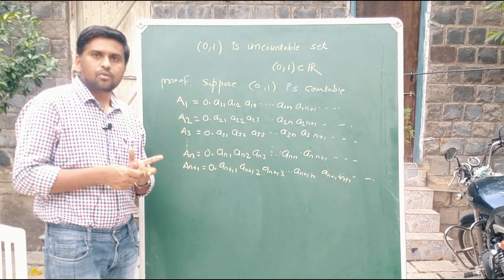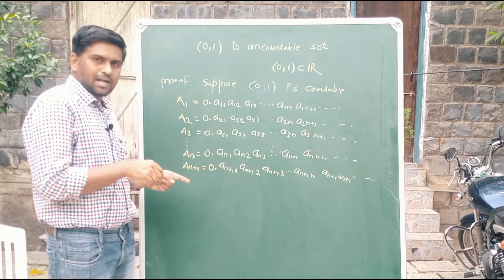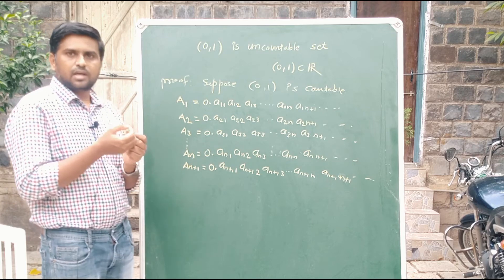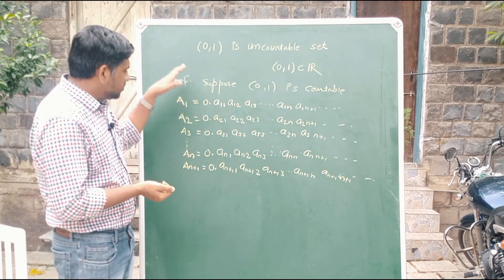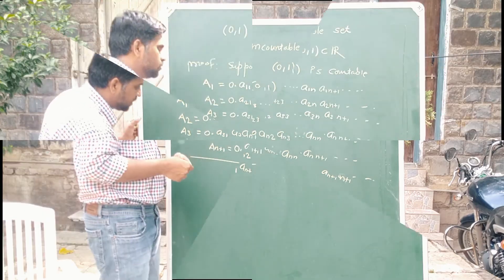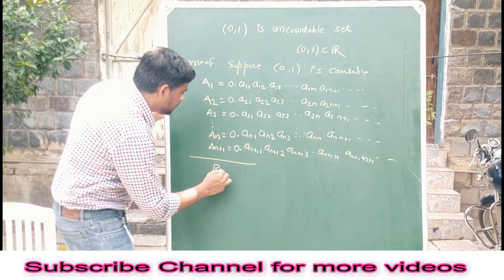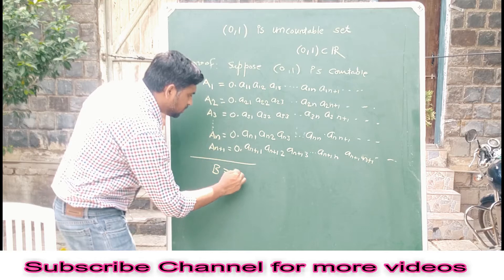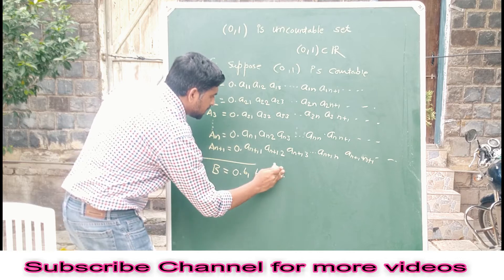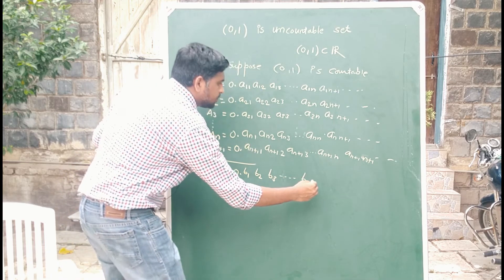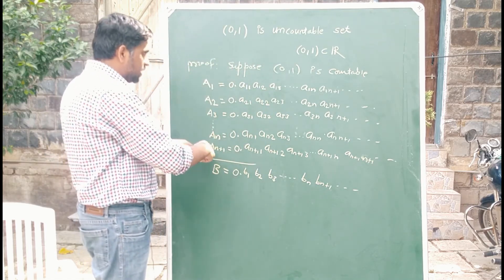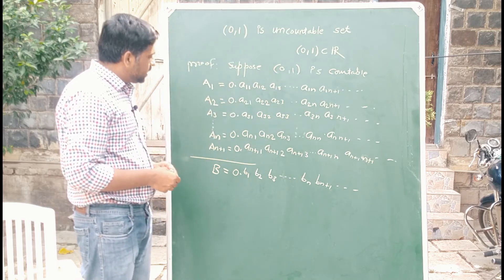Now, if there exists one more element which is not listed, that means our assumption that the set is countable is wrong, because we cannot miss any element. We define a new element b = 0.b₁ b₂ b₃ b₄ ... bₙ bₙ₊₁ and so on. This is a new element from the open interval (0,1), and we define it using specific conditions.